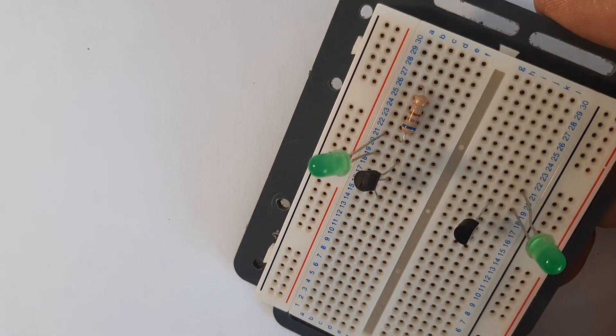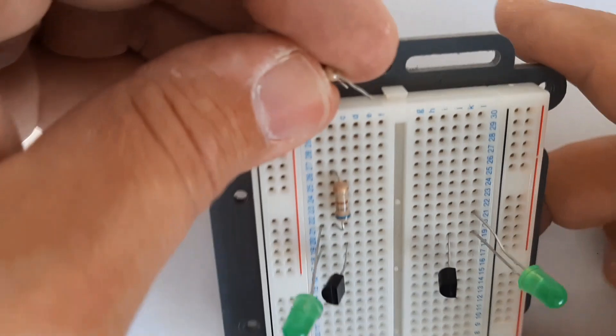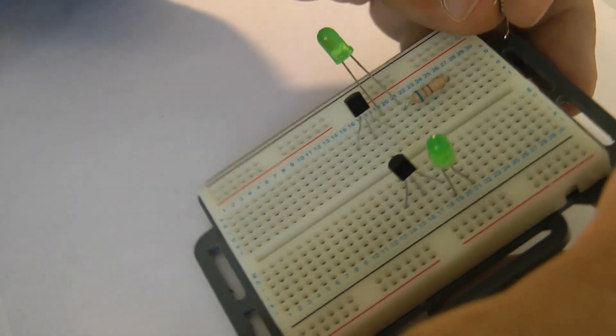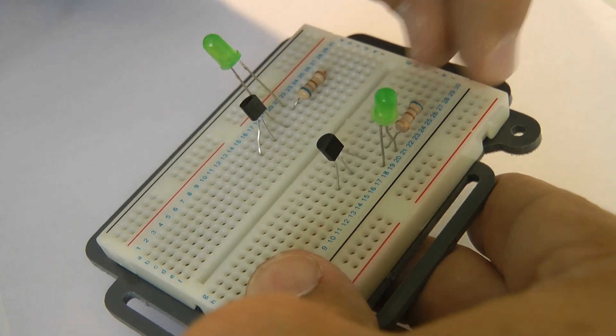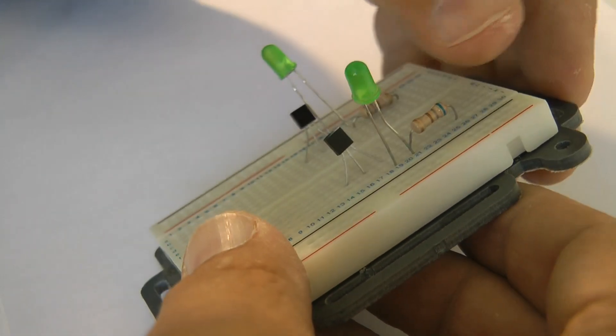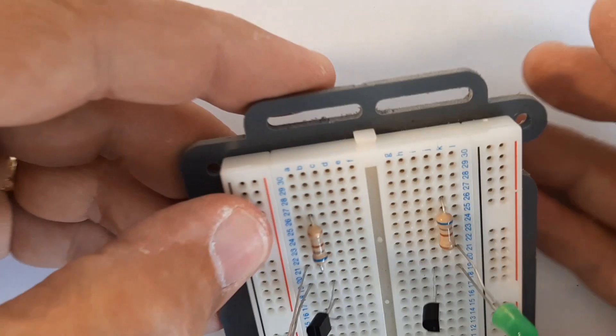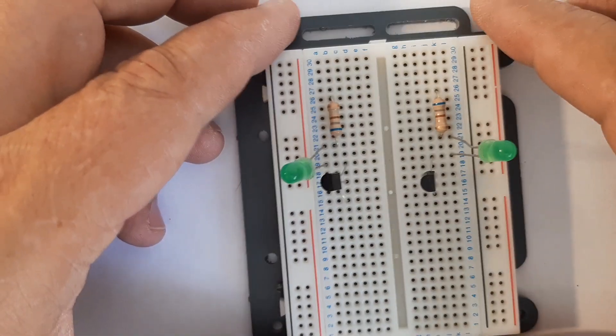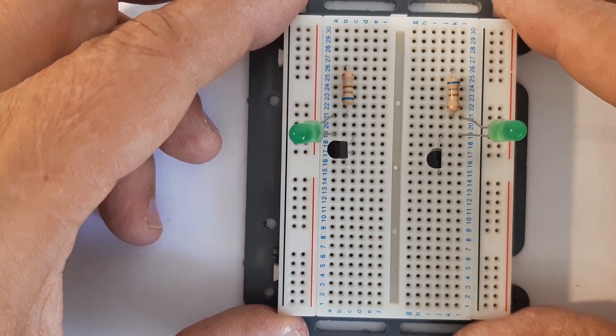And now what we're going to do is we're going to put a current limiting resistor over here and put one on the other side as well. So hopefully my hands are not covering up and obscuring what I'm doing. Notice how these parts connect by being in the same row.